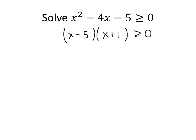If we draw a number line, whether x minus 5 is positive or negative depends on which side of 5 we're on. If x is greater than 5, this number is positive; if x is less than 5, this number is negative. Similarly, for negative 1 on the number line: if we're greater than negative 1, x plus 1 is positive, and if we're less than negative 1, x plus 1 is negative.